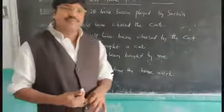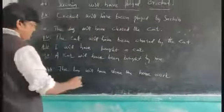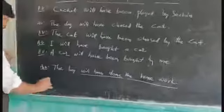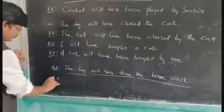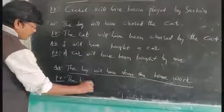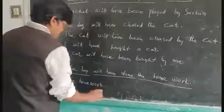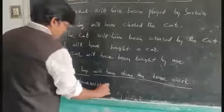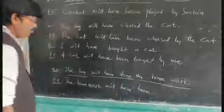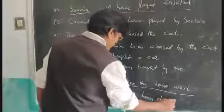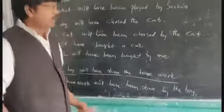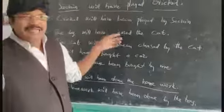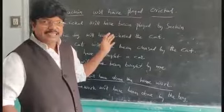Another example: 'The boy will have done the homework.' The object is 'the homework.' In passive voice: 'The homework will have been done by the boy.' We use the 'be' form 'been.' So we have covered simple future tense and future perfect tense. Practice and write some more sentences.